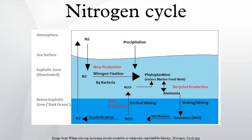The nitrogen cycle is the process by which nitrogen is converted between its various chemical forms. This transformation can be carried out through both biological and physical processes. Important processes in the nitrogen cycle include fixation, ammonification, nitrification, and denitrification.